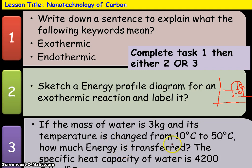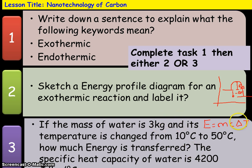The last question relates to the equation for energy used in this topic, which is the same as in P1: energy equals the mass of the material you're heating times the specific heat capacity times the change in temperature. So for this we do 3 kg times 4200, which is the specific heat capacity of water, times the change in temperature which is 40 because it changes from 10 to 50.